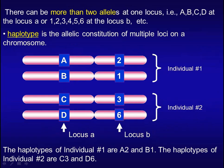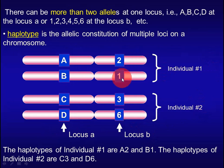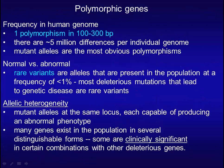Haplotype is the allelic constitution of multiple loci on a chromosome. For example, individual 1 has haplotype A2 on one chromosome and B1 on the other, while individual 2 has haplotype C3 on one chromosome and D6 on the other. In the human genome, between every 100 and 300 base pairs there is one polymorphism, resulting in around 5 million differences per individual genome.